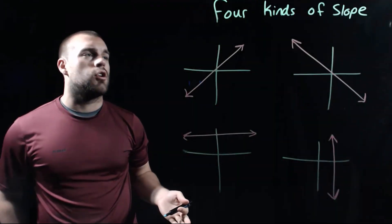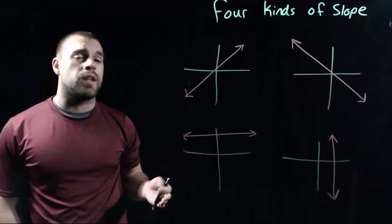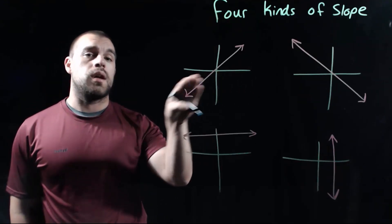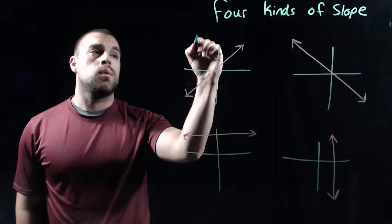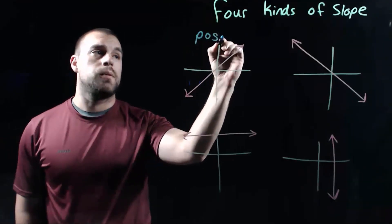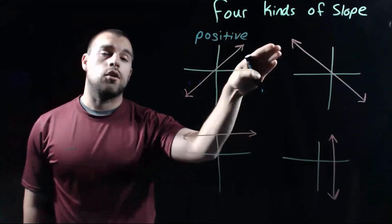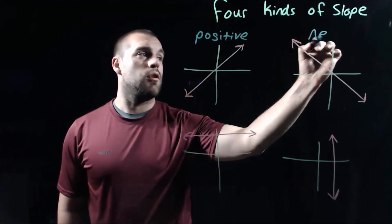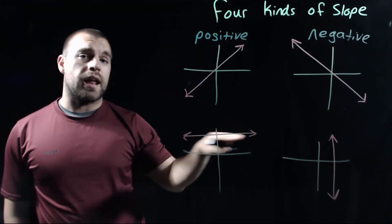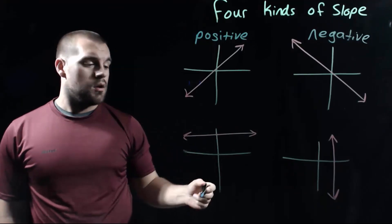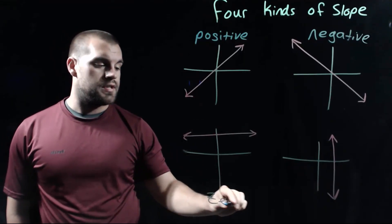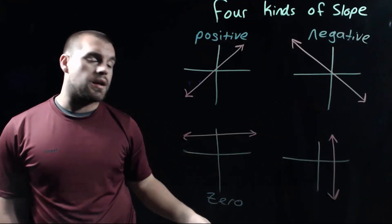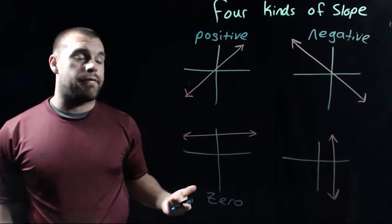When we're looking at slope, there are four different kinds of slope that a line could have. If a line goes up as we read it left to right, it has a positive slope. If our line goes down as we read it left to right, it has negative slope. If we've got a flat horizontal line, we say that has a slope of zero. And if we've got a straight up and down vertical line, we say that slope is undefined.